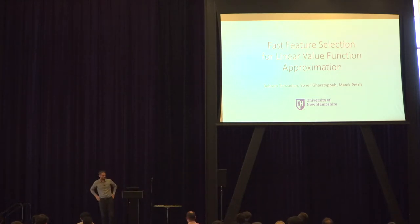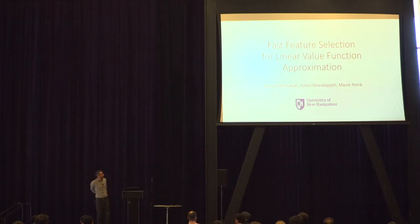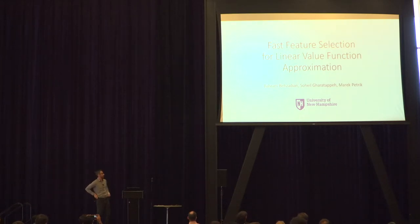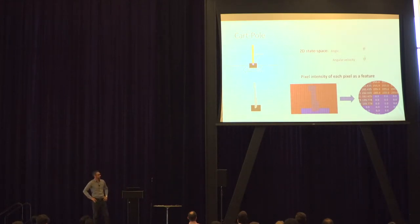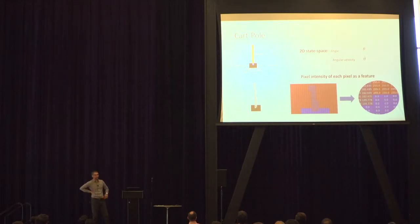Hello everyone. My name is Barham from University of New Hampshire. I'm going to talk about a new method in feature selection in the context of reinforcement learning. The best way to describe this method is through an example. Most of you know that one of the most famous benchmarks in reinforcement learning is the cartpole problem — balancing a pole on top of a cart by applying force on the cart.